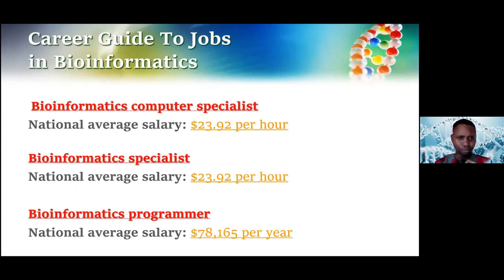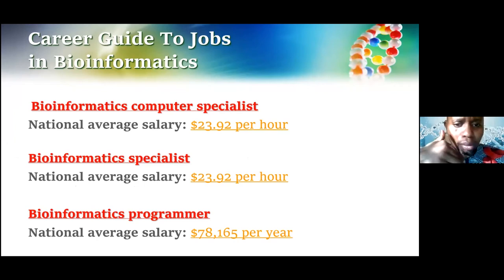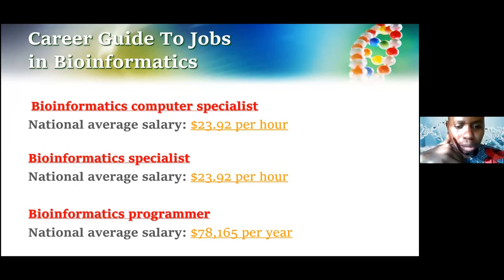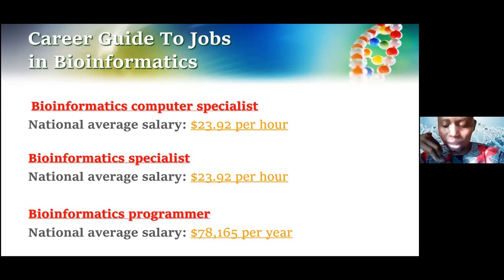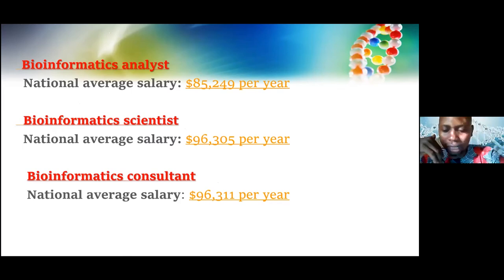There are careers in bioinformatics. If you work as a bioinformatics computer specialist, you are paid about $23.92 per hour. A bioinformatics programmer has a national average salary of $78,165 per year. There are also roles as bioinformatics analyst, bioinformatics scientist, and bioinformatics consultant, each with distinct salaries.